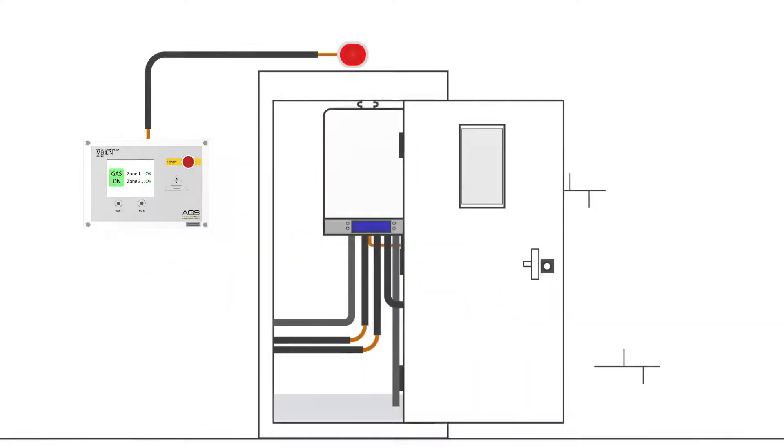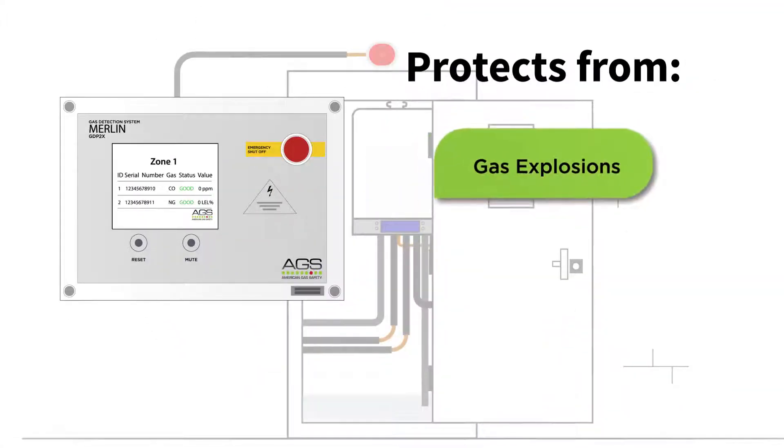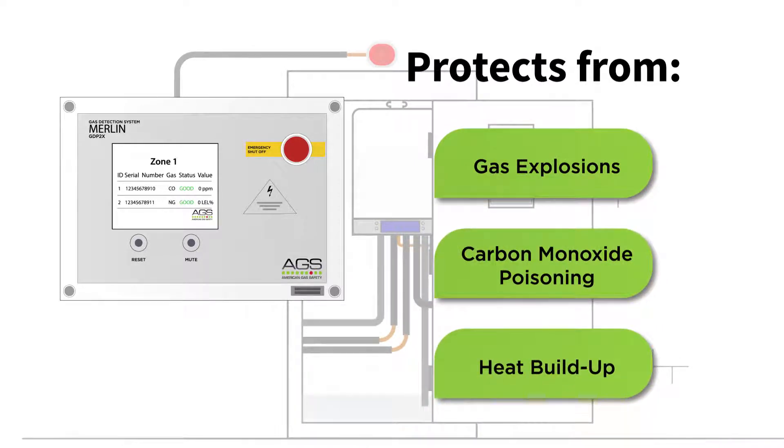The Merlin range of gas detection panels are designed to protect life and property against the dangers of gas explosions, carbon monoxide poisoning, or other disasters if left unchecked.